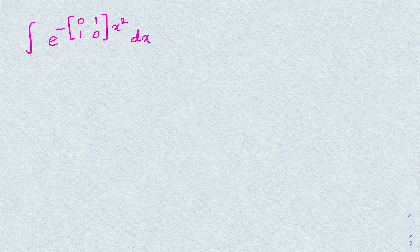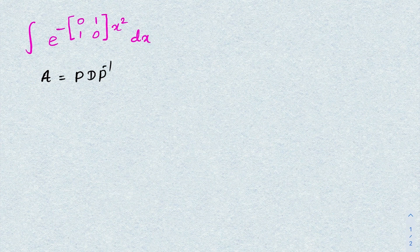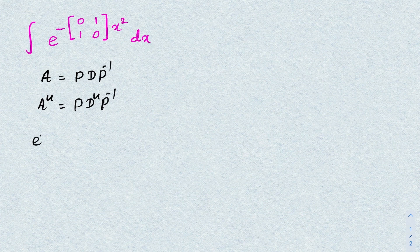How do we begin? Here we have a 2x2 matrix. If we take a diagonal matrix A, we know A is equal to P D P inverse. Then we know if you take A to the n-th power, it equals P times D to the n times P inverse.